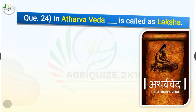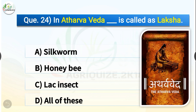Question number twenty-four: In Atharva Veda, dash is called as laksha. The options are silkworm, honey bee, lac insect, or all of these. The correct answer is option C — lac insect. In Atharva Veda, the lac insect is called as laksha.